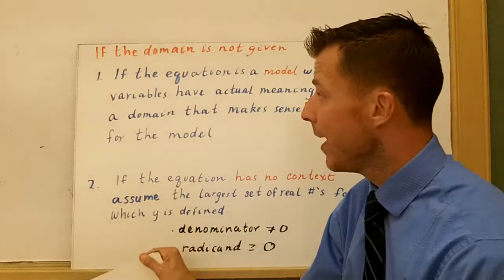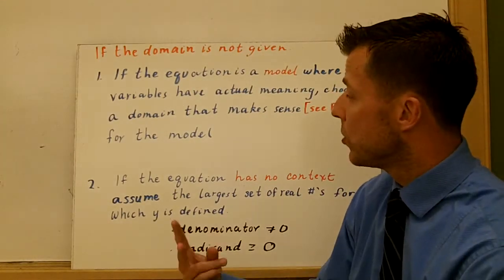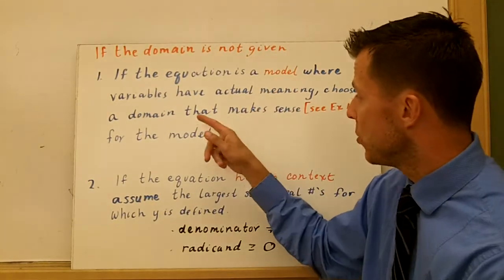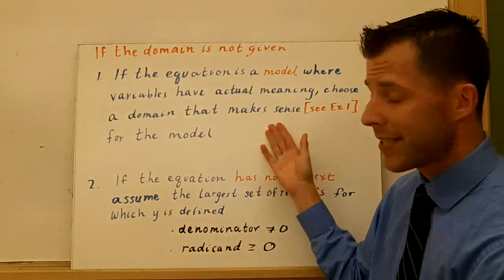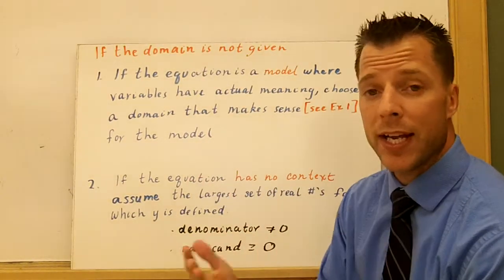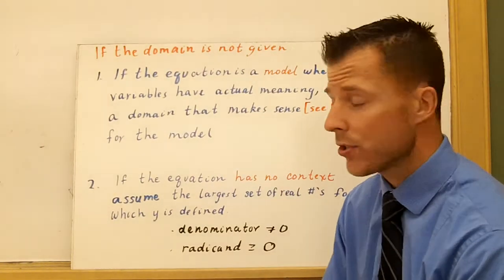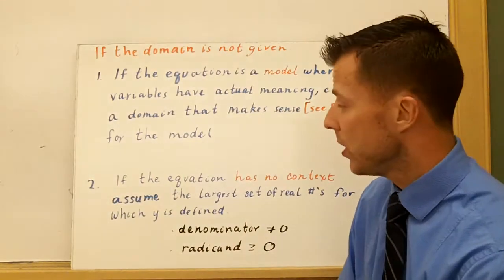So what happens if the domain is not given? You don't know what it is. There's two things you need to look at. Number one, if the equation is a model of a real life situation where the variables have meaning, you have to choose the domain that makes sense. For example, you can't have negative people. You can't have a fraction of a person. So you have to look at the context of the problem and see what domains you're going to use.